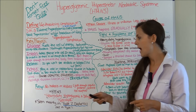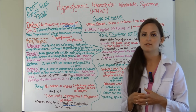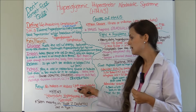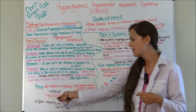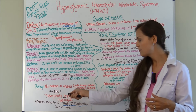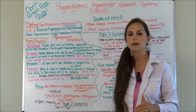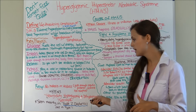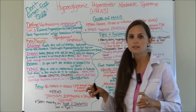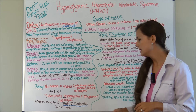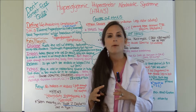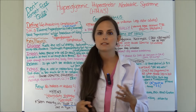To recap: with HHNS, you have no ketosis or acidosis because there's just enough insulin to prevent the body from breaking down fats — unlike DKA. You're going to have heavy duty hyperglycemia — remember that mnemonic, HHNS equals heavy duty hyperglycemia — much higher than in DKA. You'll have dehydration from hyperosmolarity causing osmotic diuresis and pulling water from the cells. This is mainly seen in type 2 diabetics, whereas DKA is mainly seen in type 1, though type 1 diabetics can rarely experience HHNS.